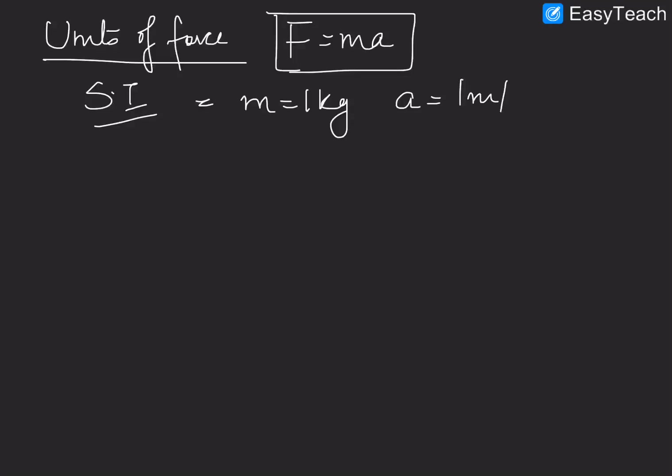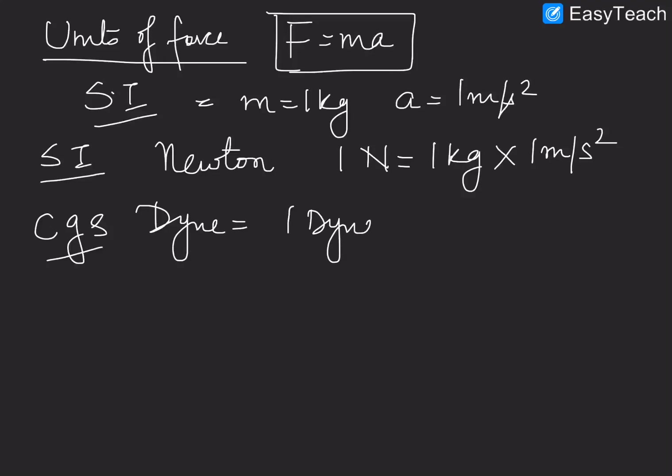Now next we have units of force, because we have obtained the formula of F equals MA. In SI system, mass is measured in 1 kg or kg, and acceleration is measured in meter per second square. So the SI unit of force is Newton. You can define 1 Newton as when a force of 1 kg moves the body with an acceleration of 1 meter per second square, the force is said to be 1 Newton. And in CGS system, force's unit is dyne. That means 1 dyne can be defined as when a body of 1 gram moves with an acceleration of 1 centimeter per second square, then the force is said to be 1 dyne. You can also derive the relation between Newton and dyne, and 1 Newton is always equal to 10 raised to power 5 dyne.